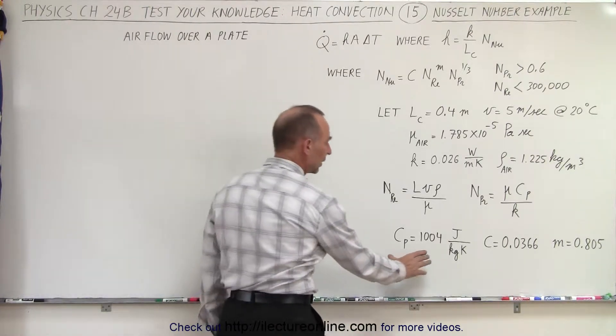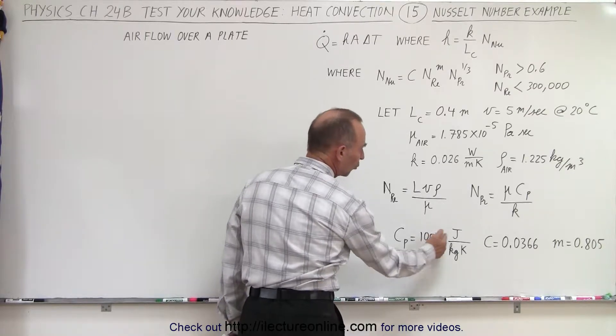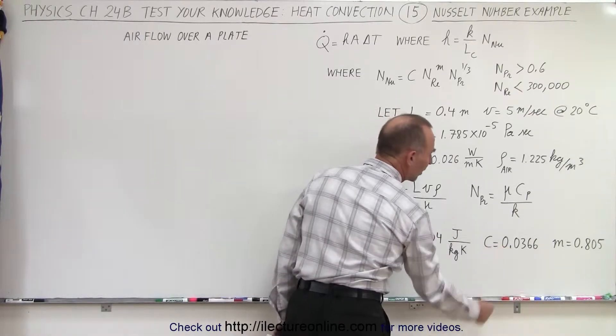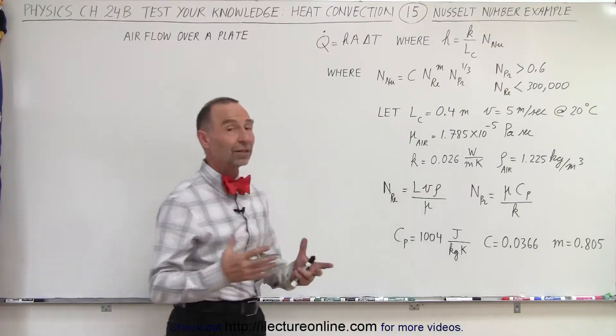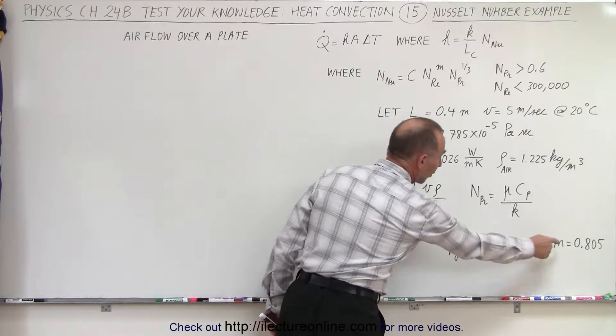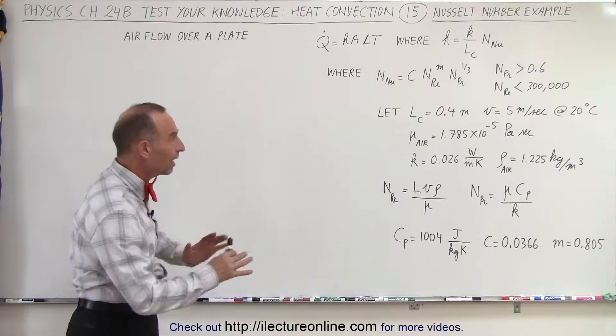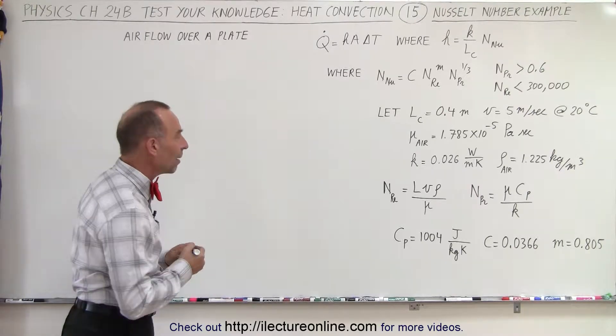And then, knowing that we calculated the specific heat for air as 1,000 joules per kilogram per kelvin, and the constant that we got off the table for the value of the Reynolds number that we're going to expect, 0.0366, with an exponent of 0.805. So let's go ahead and just calculate it as an example.